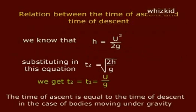Relation between the time of ascent and time of descent. We know that h is equal to u square by 2g.